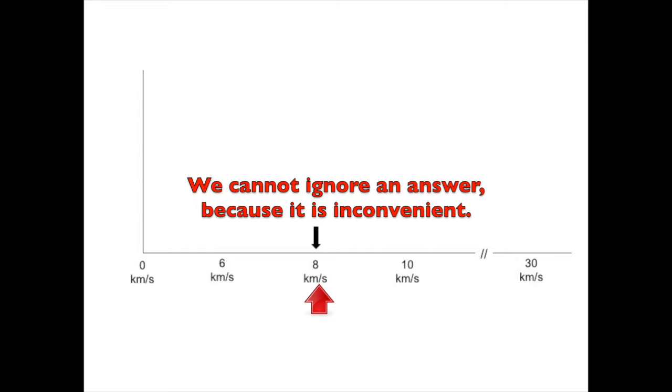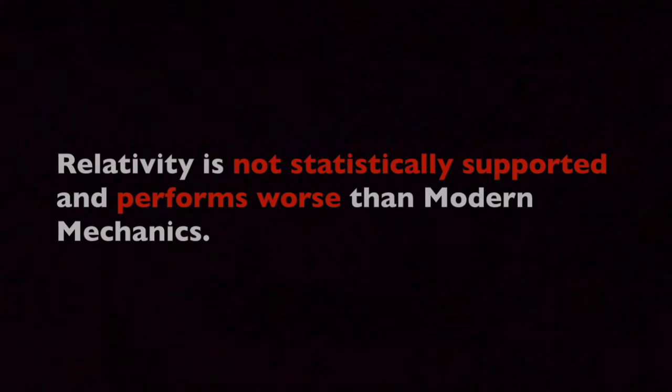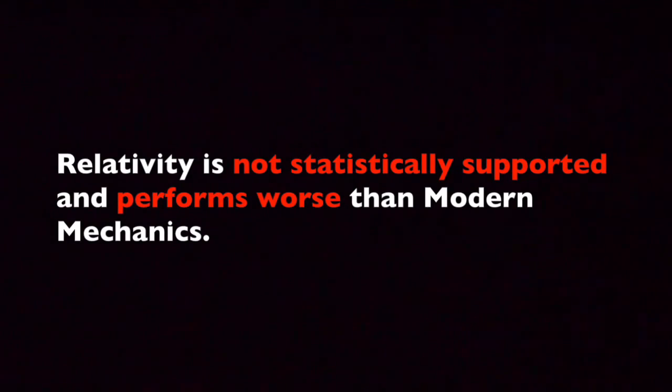But this conclusion is incorrect. Error in math and science is explained in two ways, in absolute terms and with statistics. To show relativity is wrong, I must show that modern mechanics outperforms relativity statistically and in absolute terms.